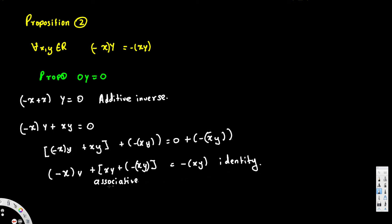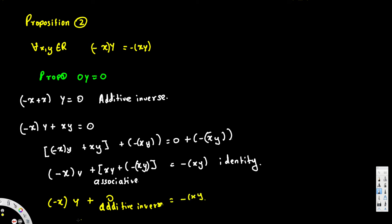Using the associative grouping, we see that xy plus negative xy equals zero by additive inverse. So we get negative x times y plus zero, which equals negative x times y. This step uses the additive inverse axiom.